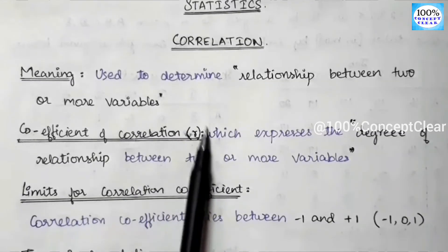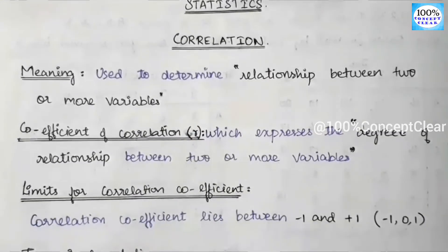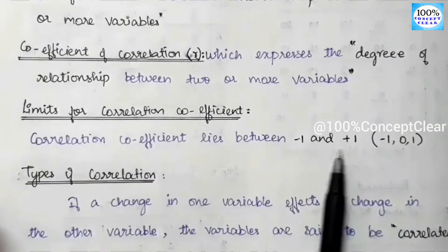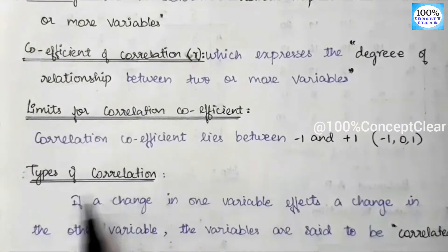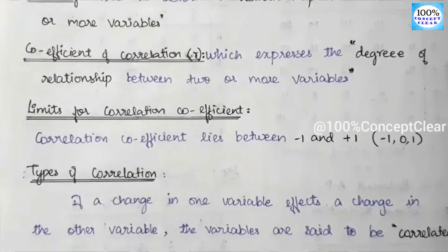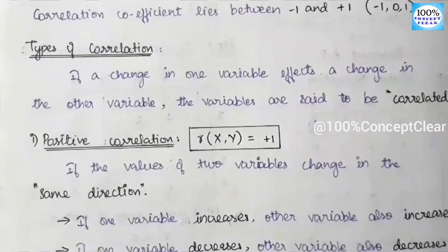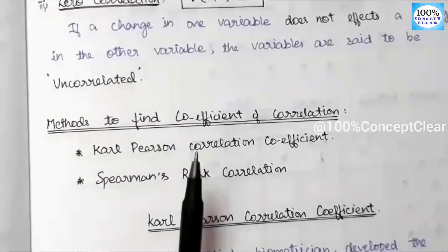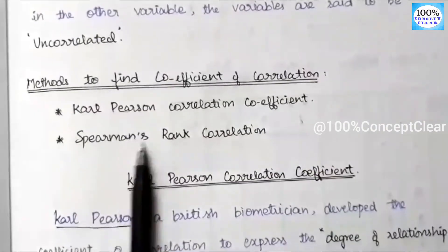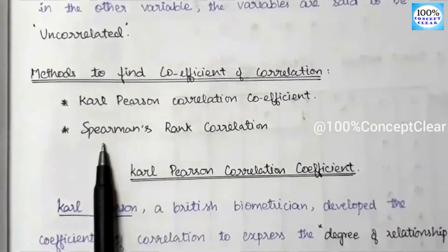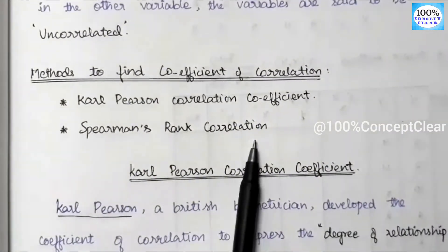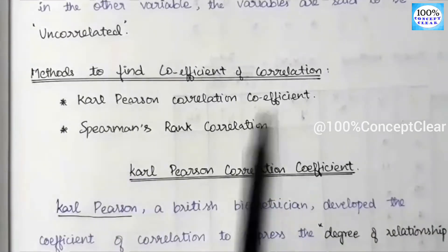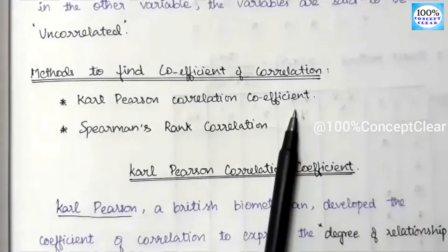The correlation coefficient is denoted by r in small letter. We have to denote the limit: minus 1 is less than or equal to r, which is less than or equal to plus 1. We have three types of correlation and two methods of correlation. In this video we have covered the introduction — the next video covers Karl Pearson's correlation coefficient.